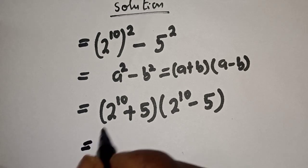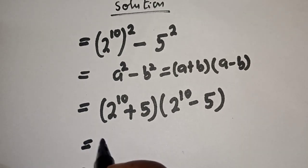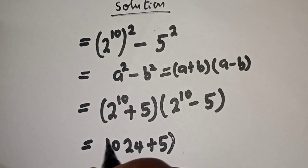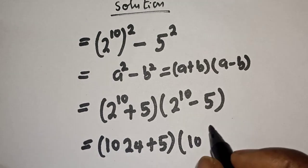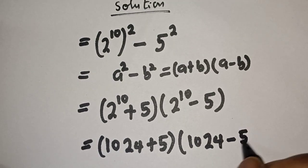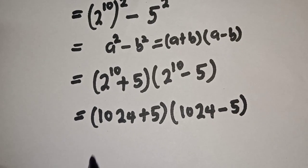This is equal to 2 raised to power 10 is 1024, plus 5, bracket 1024 minus 5.